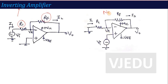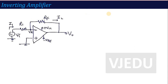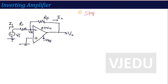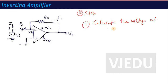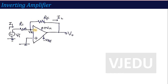Now let us mathematically calculate the output voltage of the inverting amplifier circuit to prove it works as described. There is a general two-step method to analyze any op-amp circuit to find the output voltage. Step one: calculate the voltage at the negative terminal, called Va.